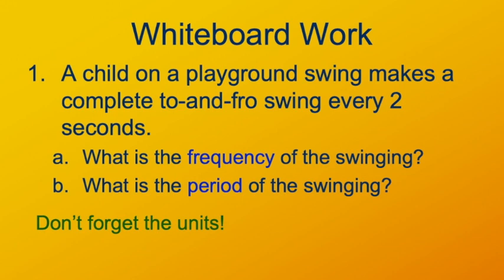Remember, the frequency is how many oscillations you have per unit of time — cycles per second, in hertz. The period is how long it takes one cycle to occur, in seconds per cycle. Here we have one cycle every two seconds, so the period would be two seconds. The frequency would be the reciprocal of that: one half hertz.